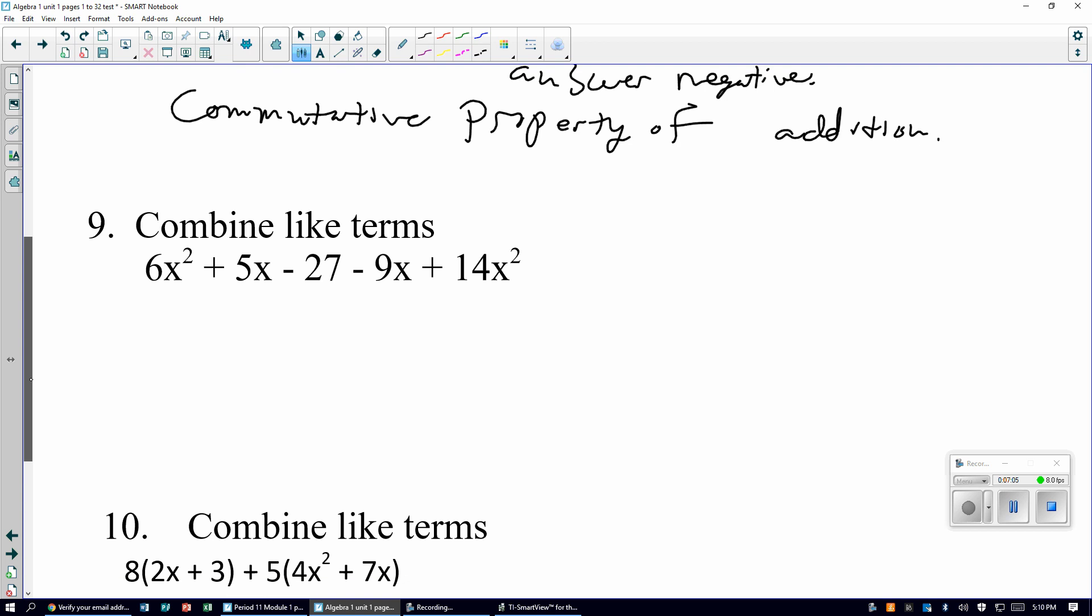Combine like terms, you can do it any way you like. There's no distribution to do, just add and subtract them. We do the 5x minus the 9x, then we do the 27. So 6x squared plus 14x squared is 20x squared. Then we have 5x minus 9x is negative 4x, and then it says minus 27.